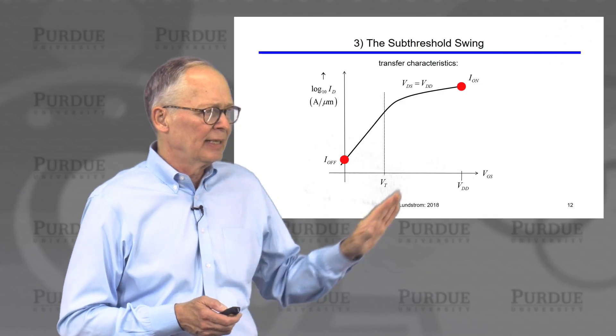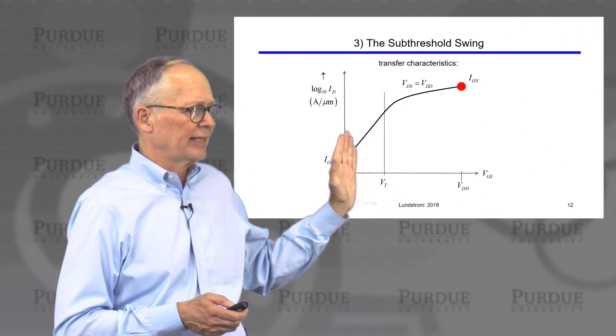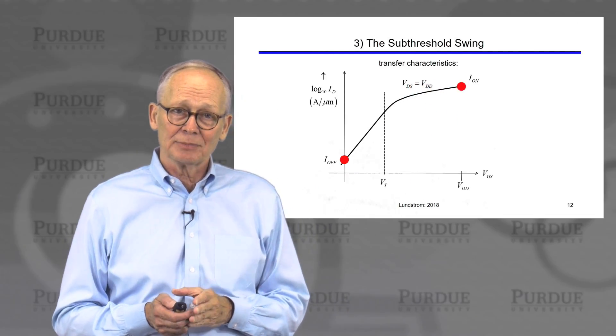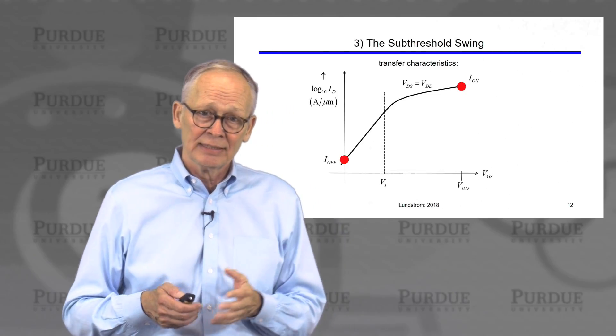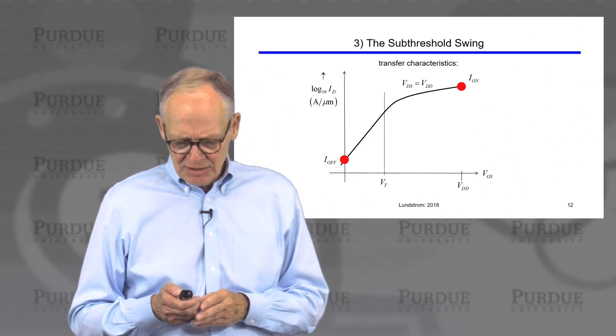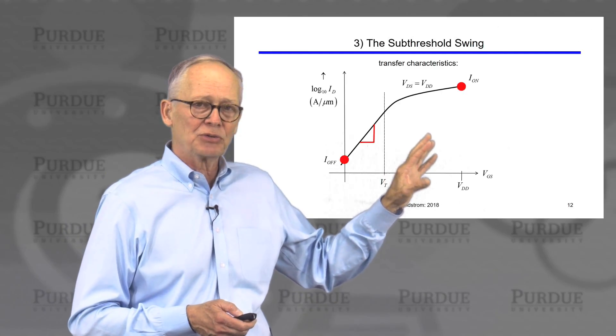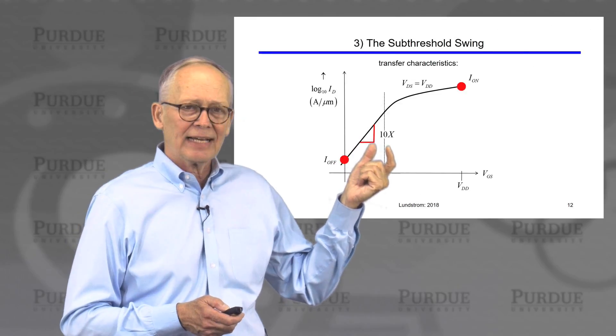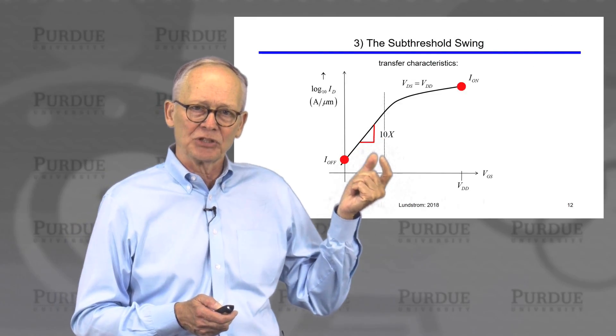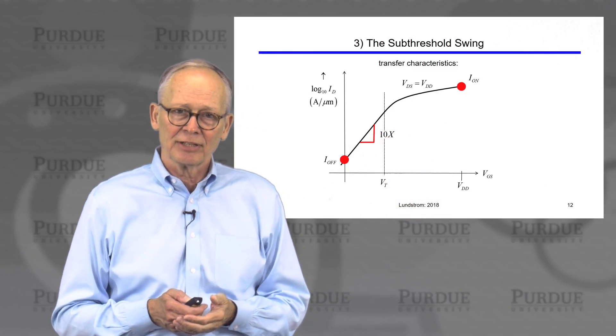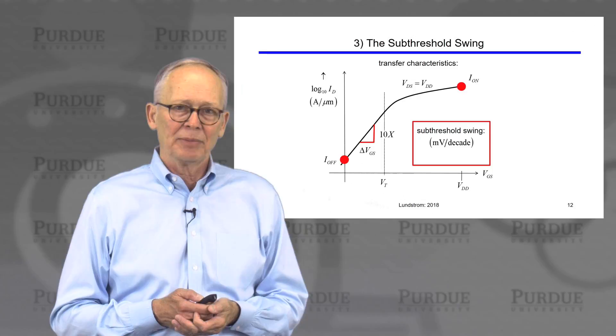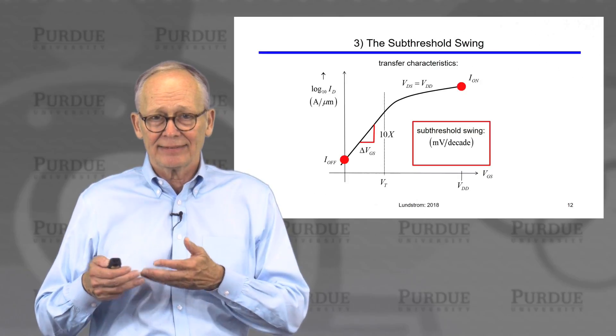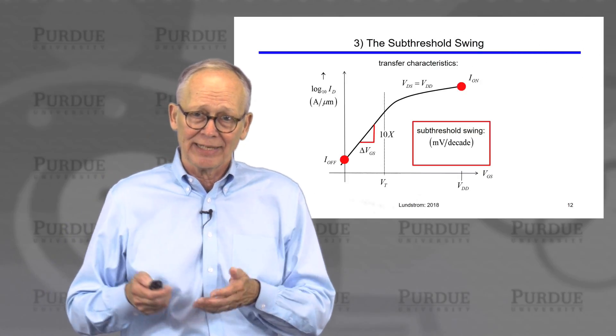Now, we also talked about the sub-threshold swing, which is a measure of how much voltage does it take to go from off to on. We would like that voltage to be as small as possible because power dissipation goes as voltage squared. We'd like to minimize that power dissipation. So that transition is determined by the sub-threshold swing of the transistor. The sub-threshold swing of a transistor is how many millivolts we have to increase the gate voltage by in order to increase the drain current an order of magnitude. So we call that parameter the sub-threshold swing, and we usually quote it in millivolts of gate voltage that it takes to increase the drain current a decade, millivolts per decade.